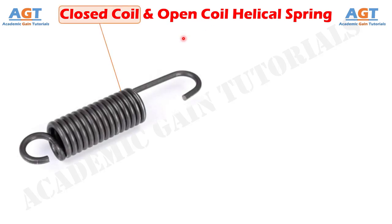In a closed coil helical spring, the spring wire is bent in such a way that there exists no noticeable gap between two adjacent coils. Basically, the coils are wound so closely that two adjacent coils touch each other.